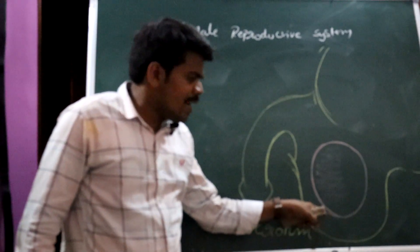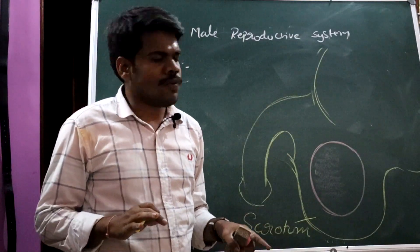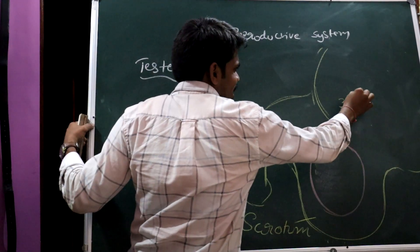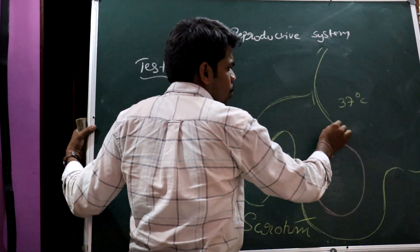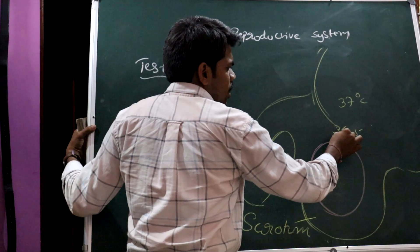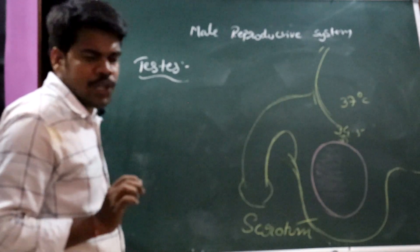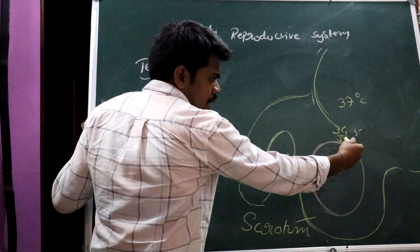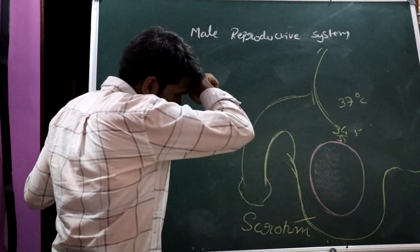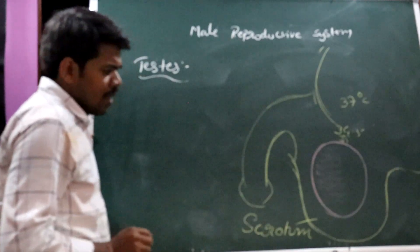Why are testes present in the scrotum? For sperm production — for spermatogenesis — the testes must maintain a temperature 2 to 2.5 degrees centigrade less than the body temperature. If body temperature is around 37°C, the testes should be maintained at about 34.5 to 35°C. That is why the testes are present outside the abdominal cavity, and the scrotum maintains that suitable temperature for sperm production.